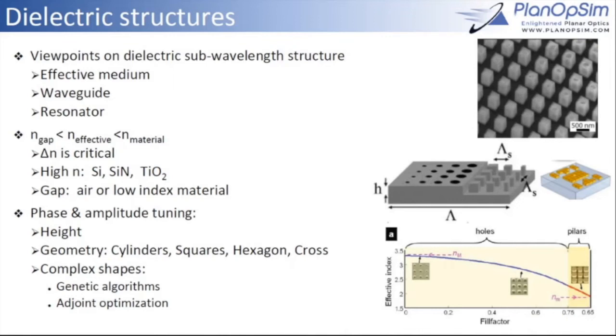At that point, we start to build a library of structures in order to get the phase and amplitude that we want, in some cases also tuning the phase dispersion, the difference in phase across the wavelength band of our interest. A lot of demonstrations use geometrical shapes like cylinders, squares, or hexagons. Sometimes it can be also complex shapes that are obtained using things like genetic algorithms or joint optimization.